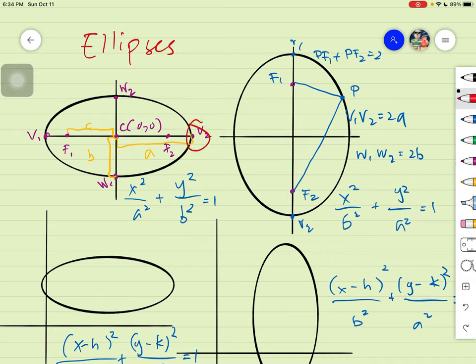We have the vertices, these two. Vertices are just simply located at the long end of your ellipses. Then we have also our co-vertices, which is w2 and w1. That's one of these co-vertices, which is located at the short ends of your ellipses.